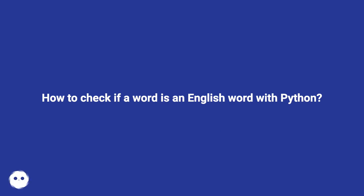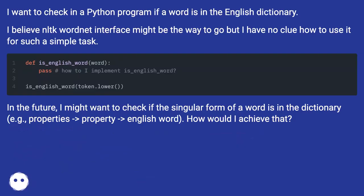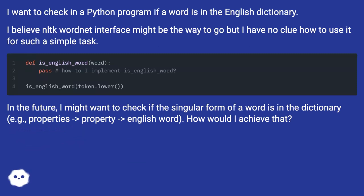How to check if a word is an English word with Python? I want to check in a Python program if a word is in the English dictionary. I believe NLTK's WordNet interface might be the way to go, but I have no clue how to use it for such a simple task.